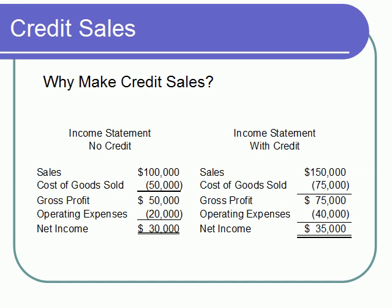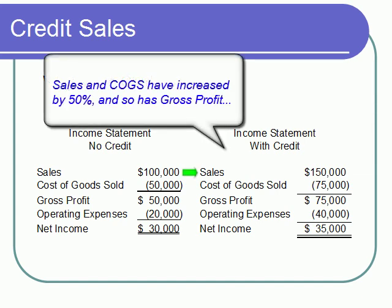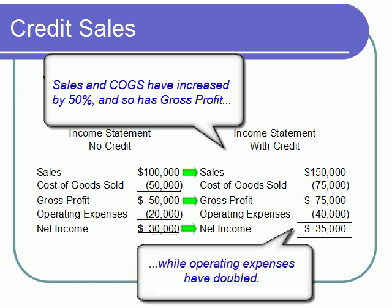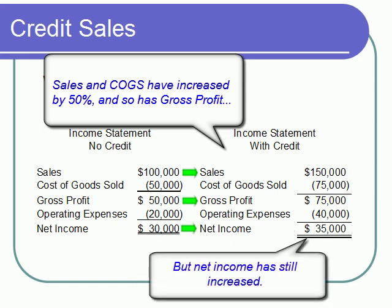Let's look at an example. If sales increase by 50% when credit terms are offered, this results in a 50% increase in gross profit. And even if operating expenses double, net income still increases. Therefore, this company will find it attractive to offer credit terms, even though it's going to substantially increase its operating expenses.